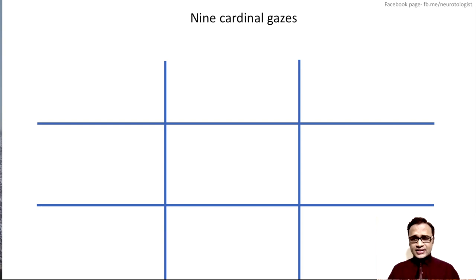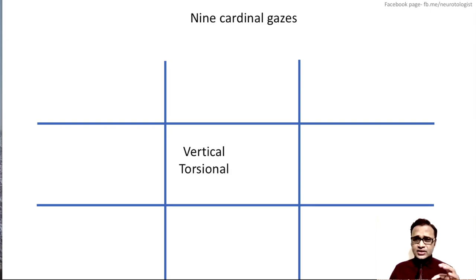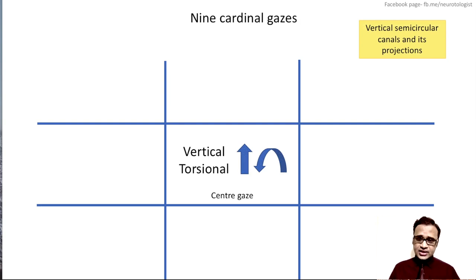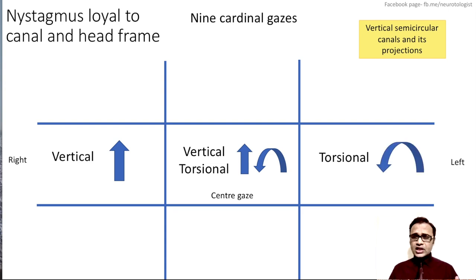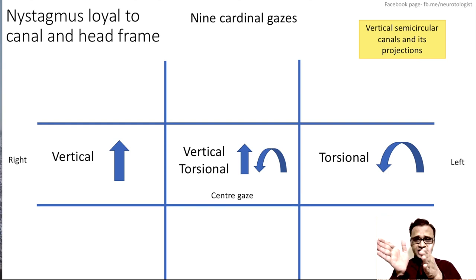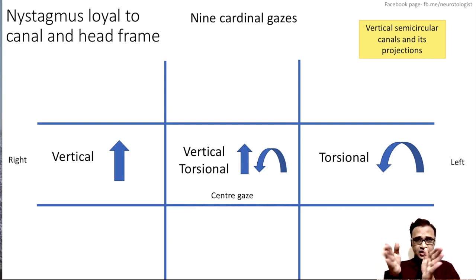We know that there are nine cardinal gazes in which we test the eye movements. The nystagmus related to the vertical semicircular canal — for example, BPPV — is mixed, that is vertical torsional in the center gaze. It becomes predominantly vertical on one side and predominantly torsional on the other side. The nystagmus remains loyal to the semicircular canal frame or head frame, so even if the visual axis is changing, it remains loyal to the head frame, not to the eye reference frame.